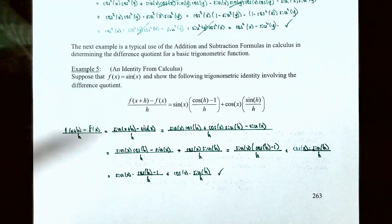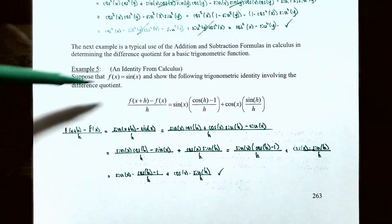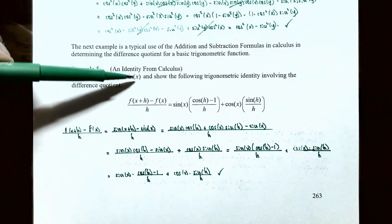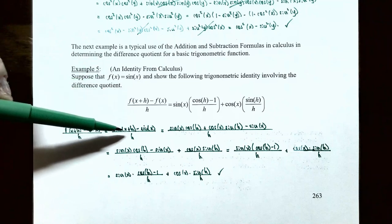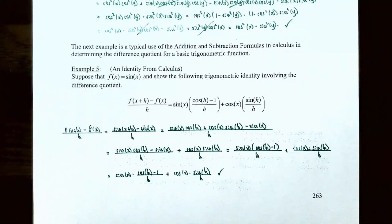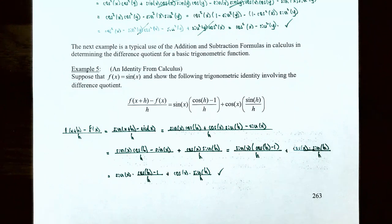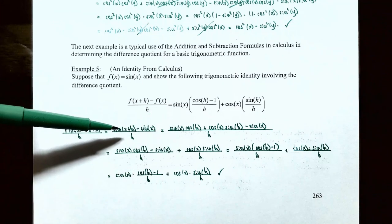Suppose f of x is the sine function, sine of x. We want to show the difference quotient — f of x plus h subtract f of x, all divided by h — equals the right-hand side. Since our function is sine of x, f of x plus h is sine of x plus h and f of x is sine of x. Using the addition formula, sine of x plus h equals sine of x cosine of h plus cosine of x sine of h.